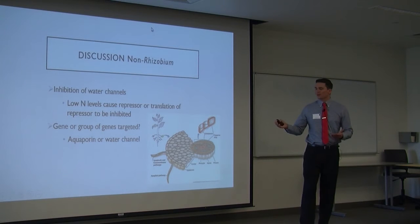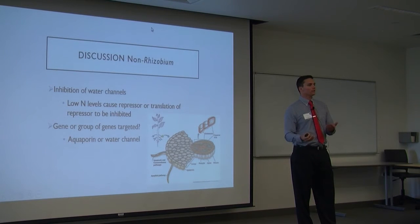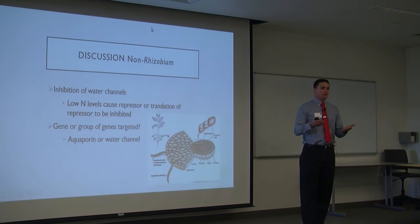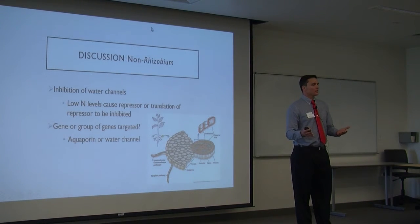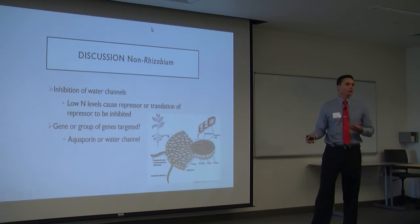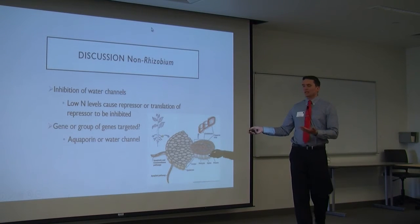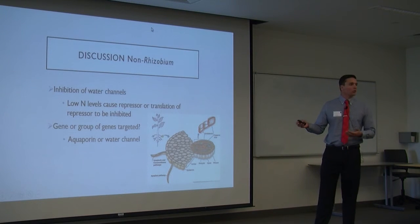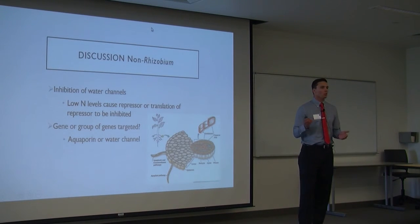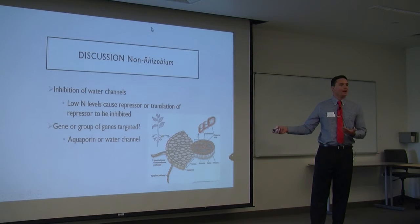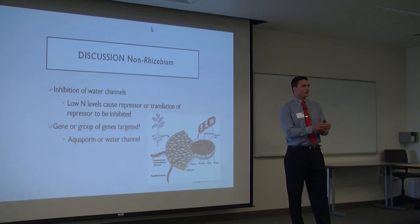This may support a theory of inhibition of the water channels. To start, you have the 2-week period of low nitrate absorption in non-rhizobium plants. If they were inhibiting the water channels, then in the 4- and 6-week periods, the low levels of nitrogen would cause the repressor — or the translation of the repressor — to be inhibited. The gene or group of genes in question here may be the Alcoporin or water channel genes. What this would do is bypass the mechanism by which they regulate nitrogen uptake, so they could take up as much high nitrogen as possible.